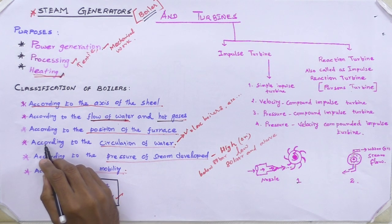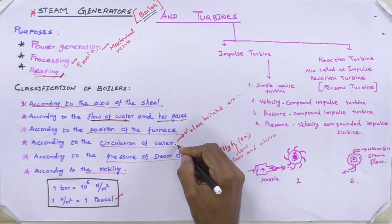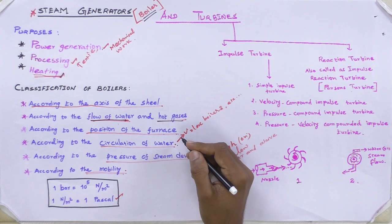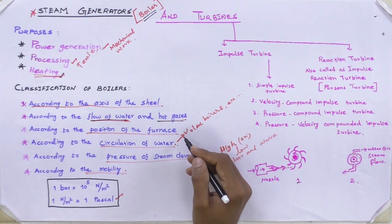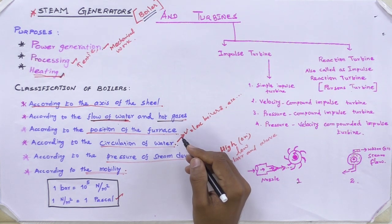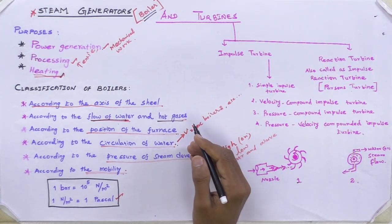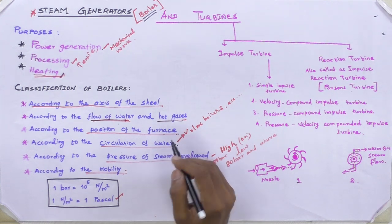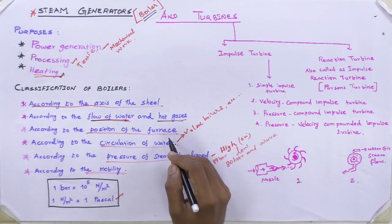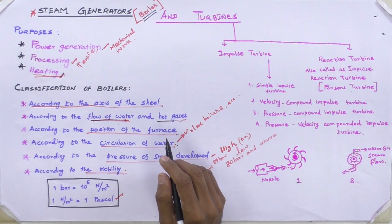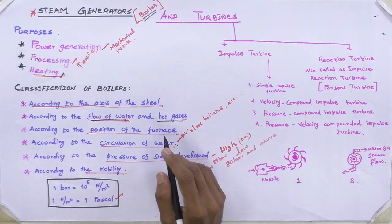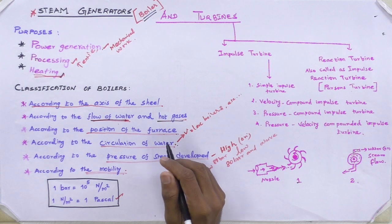The fourth classification is according to the circulation of water — it may be forced circulation or natural circulation. In forced circulation, the water is circulated by a forced pump. Examples: Velox boiler, Lamont boiler, and Benson boiler. In natural circulation, the circulation of water takes place due to natural convection currents produced by the application of heat. Examples: Lancashire boiler, locomotive boiler.